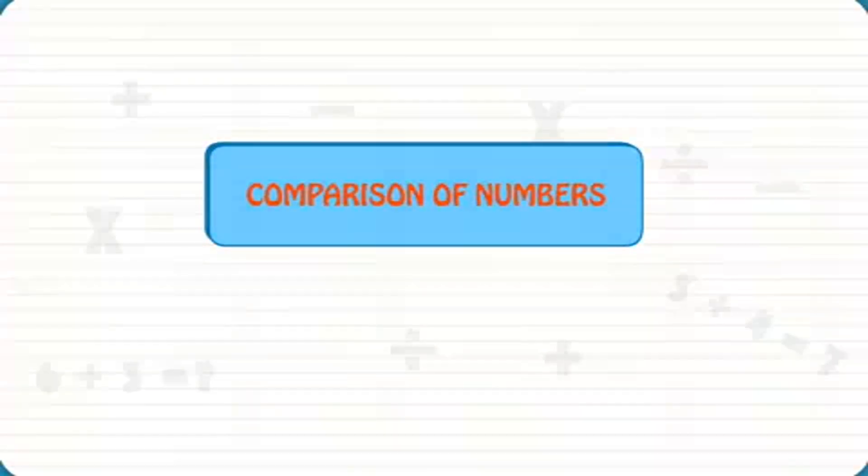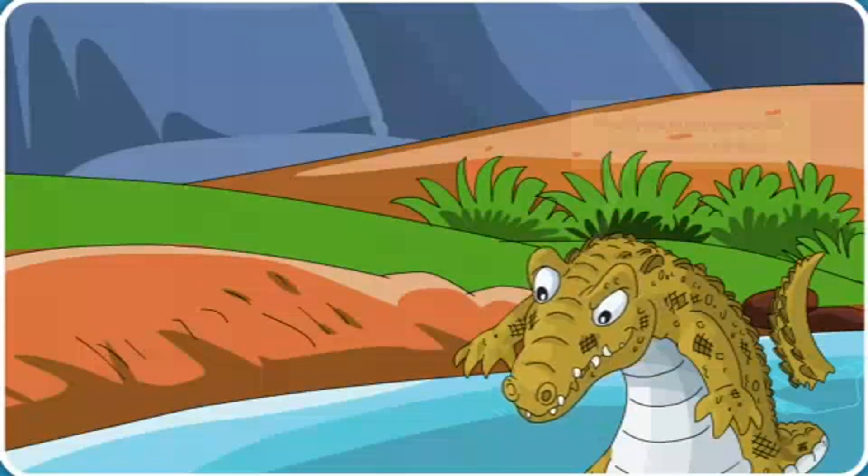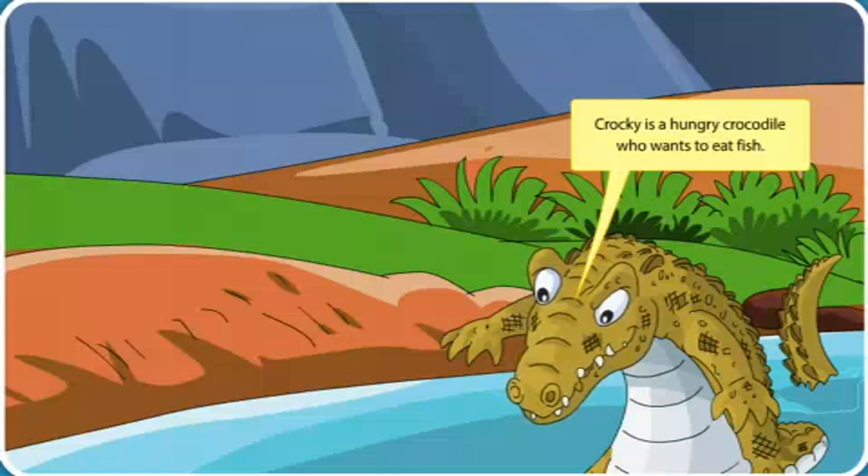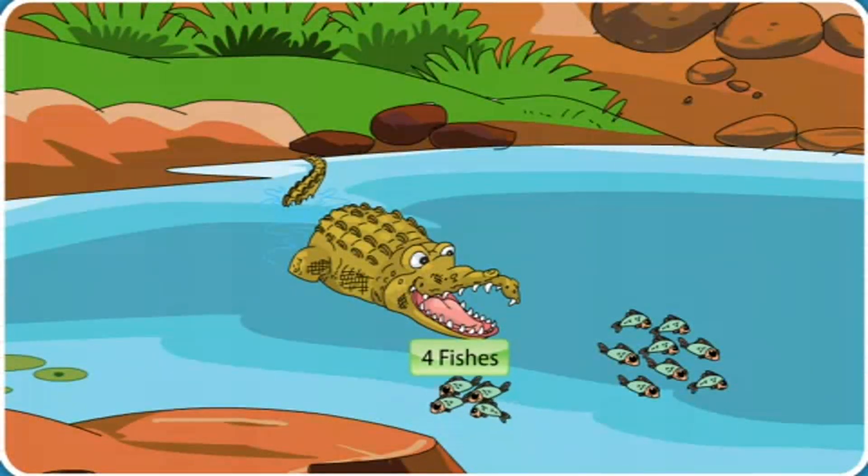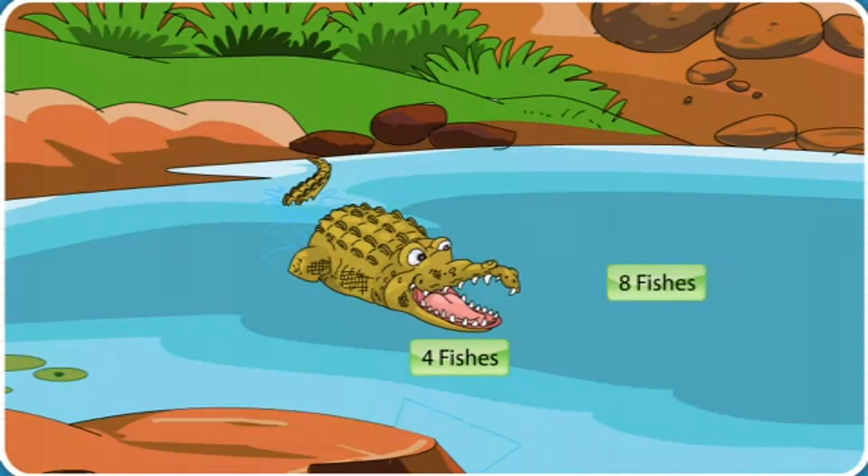Comparison of Numbers. Crocky is a hungry crocodile who wants to eat fish. He has four fishes on one side and eight fishes on the other side.